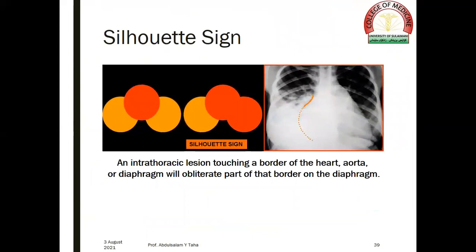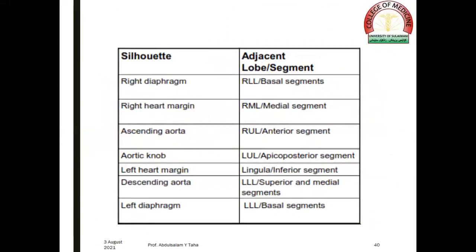The silhouette sign is an important radiographic sign. When an intrathoracic lesion touches a border of the heart or the diaphragm, it will obliterate part of that border. In this chest radiograph, the right cardiac border is invisible because of a nearby homogeneous opacity in the right lower zone — therefore the silhouette sign is positive and the diagnosis is most probably pneumonia of the right lower lobe. The table shows positive silhouette signs in different regions according to the location of the abnormality.